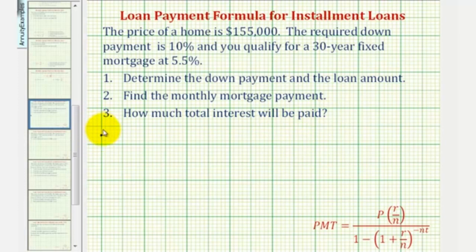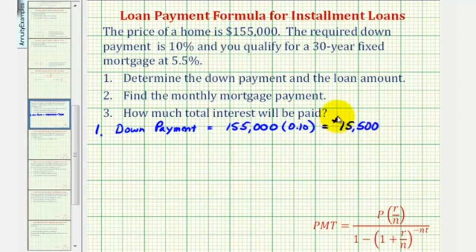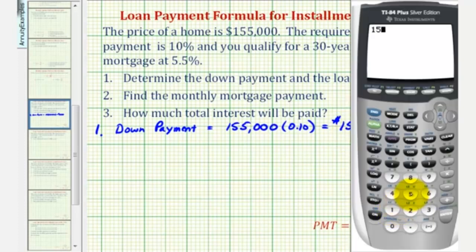So for number one, since the down payment requirement is 10%, we want to find 10% of $155,000. So that would be $155,000 times 10% expressed as a decimal, which would be 0.10, or just 0.1. This would be $15,500. Of course, if we want to check this, we can use a calculator: $155,000 times 0.10 is $15,500.